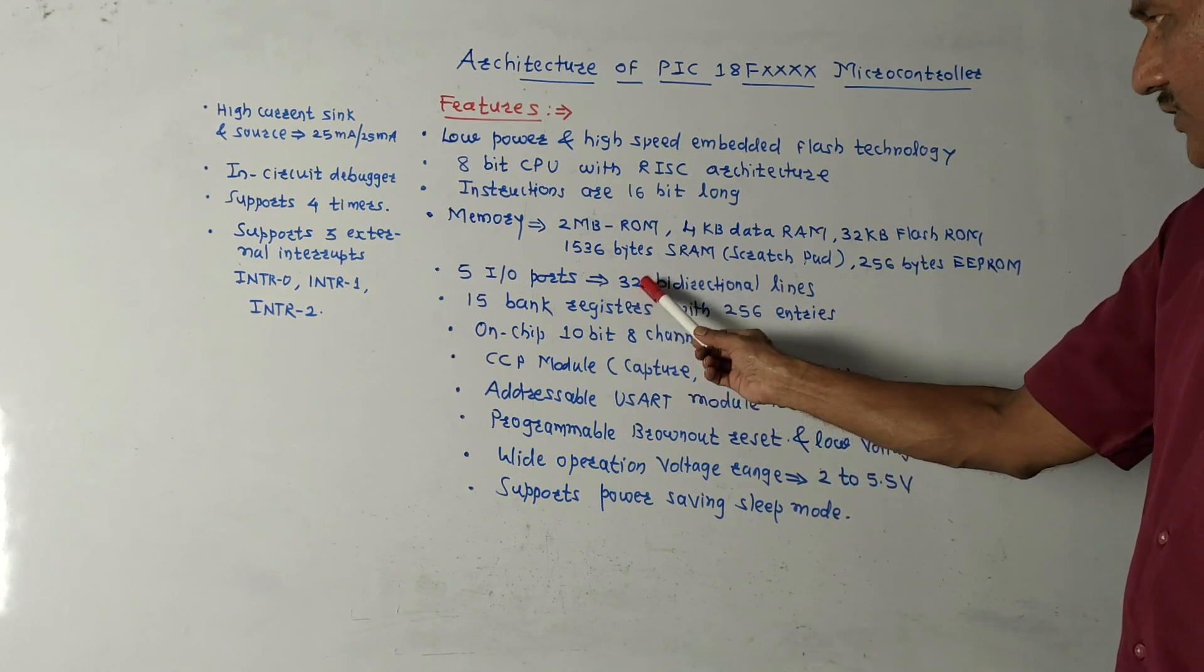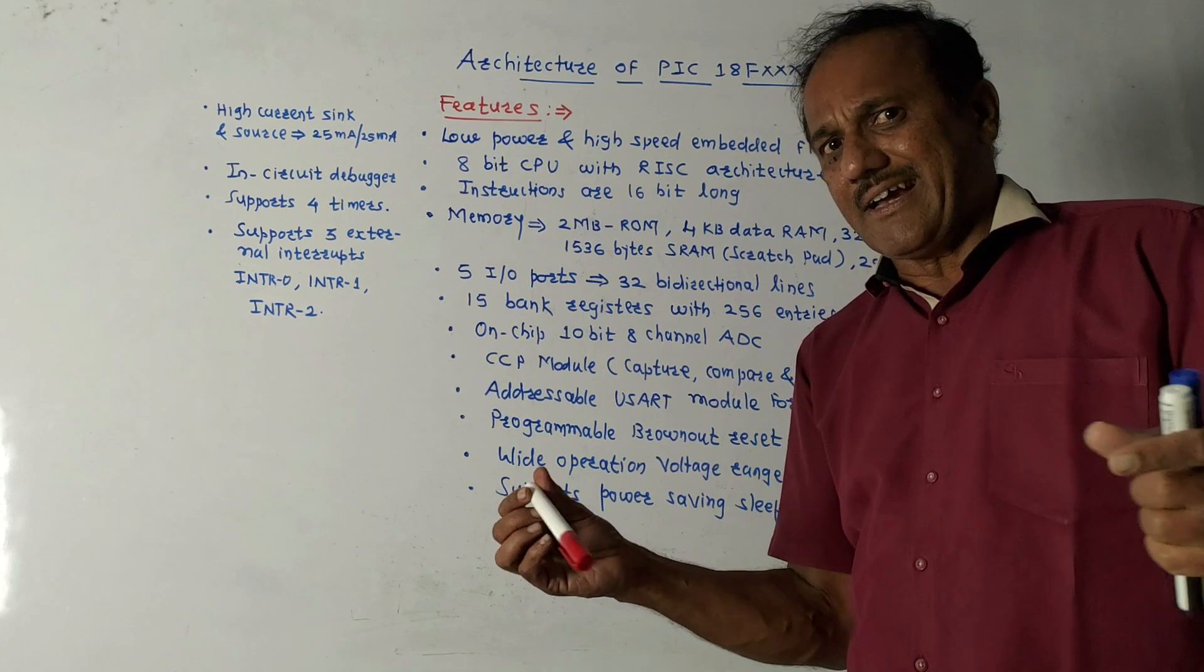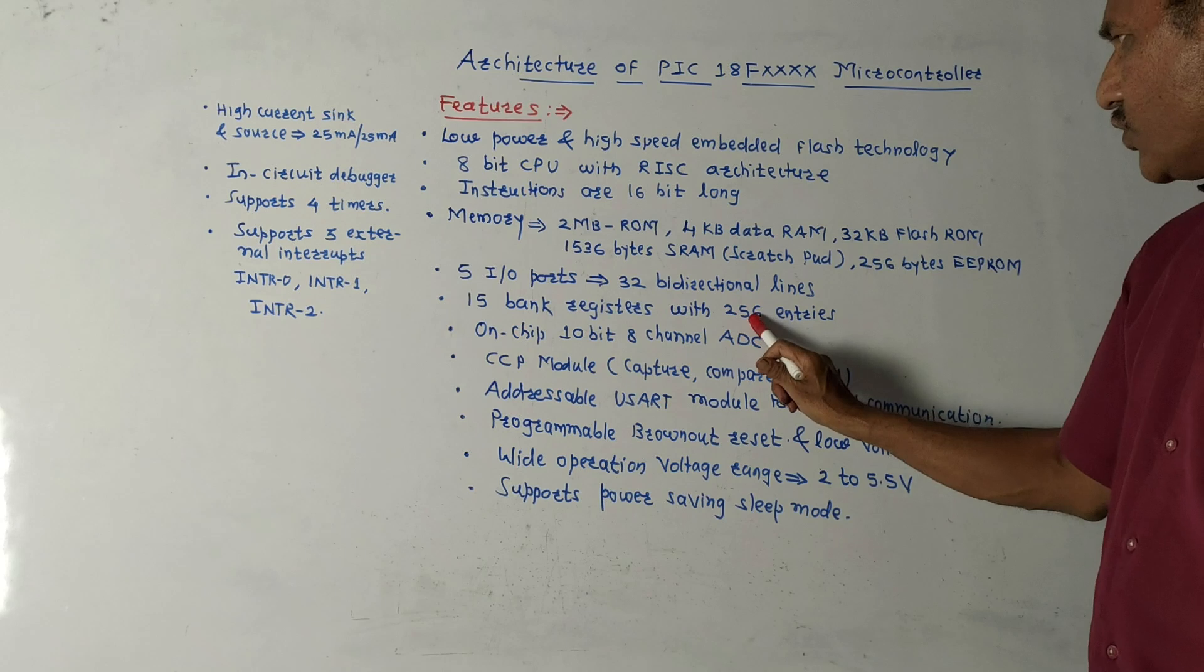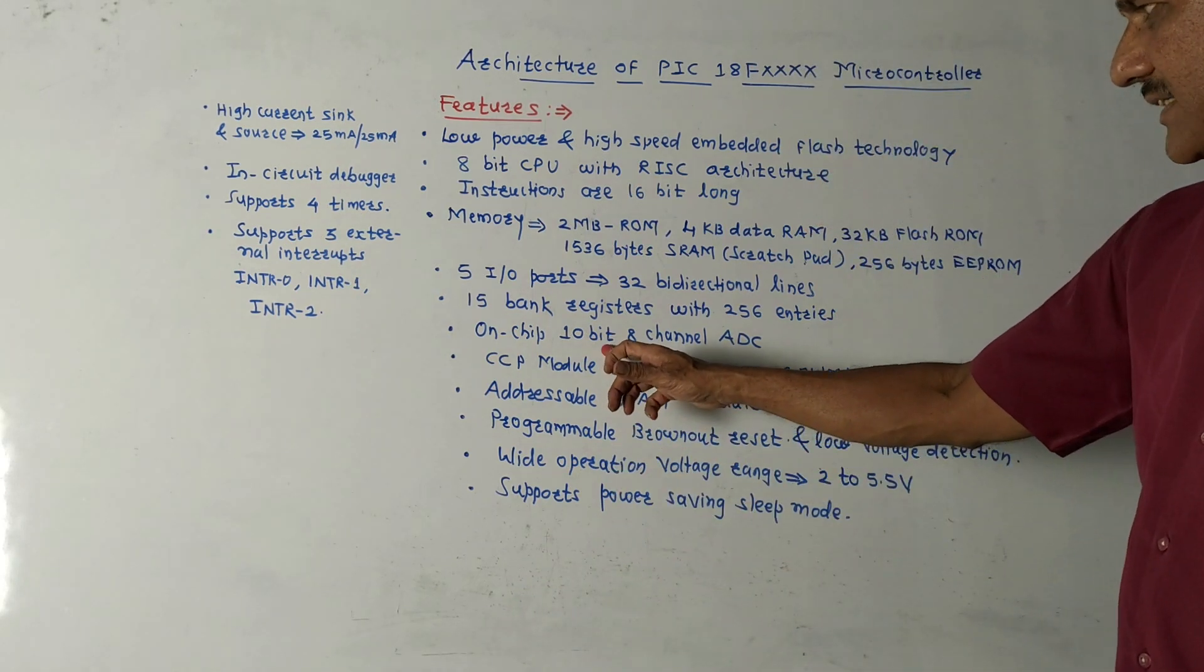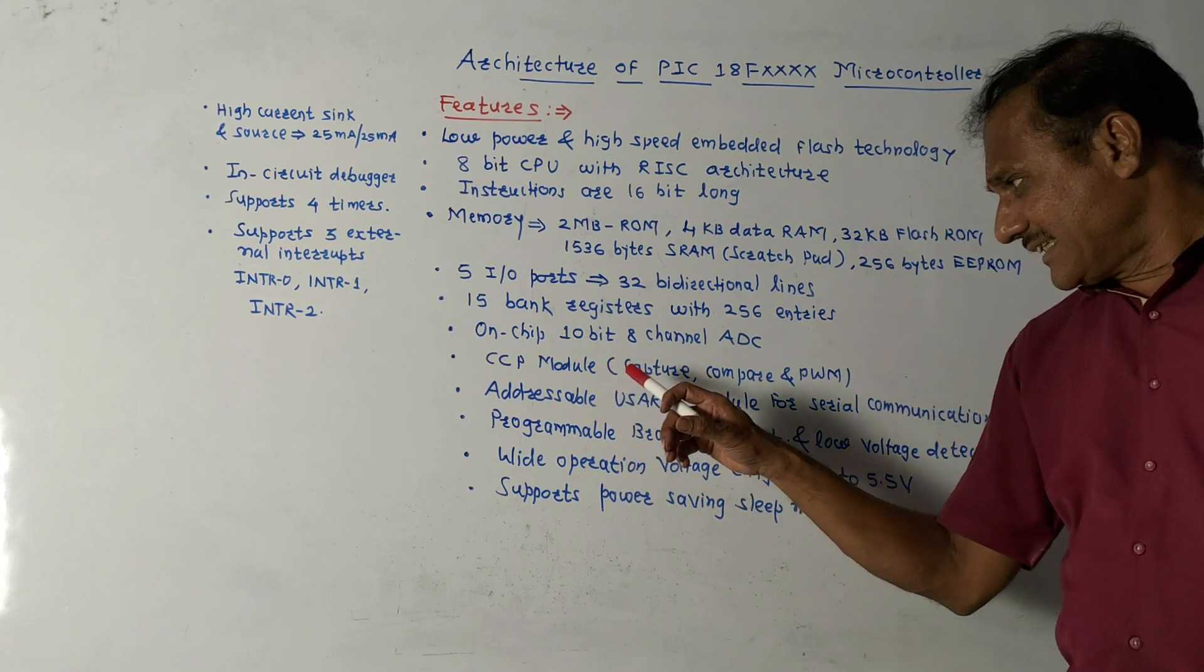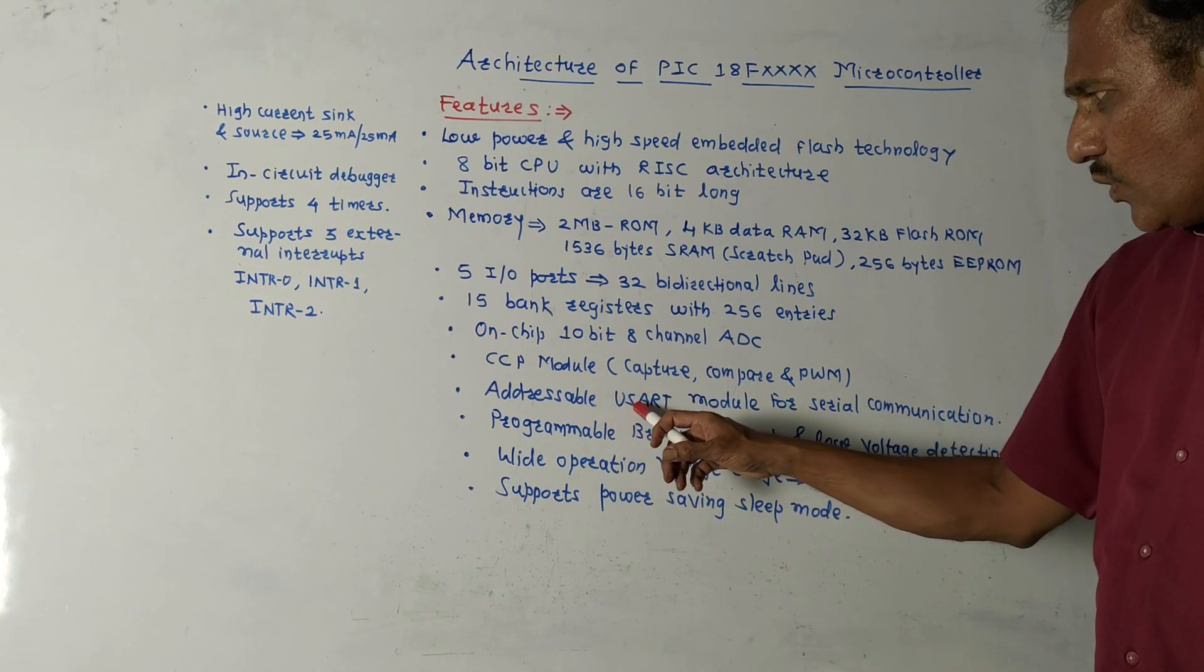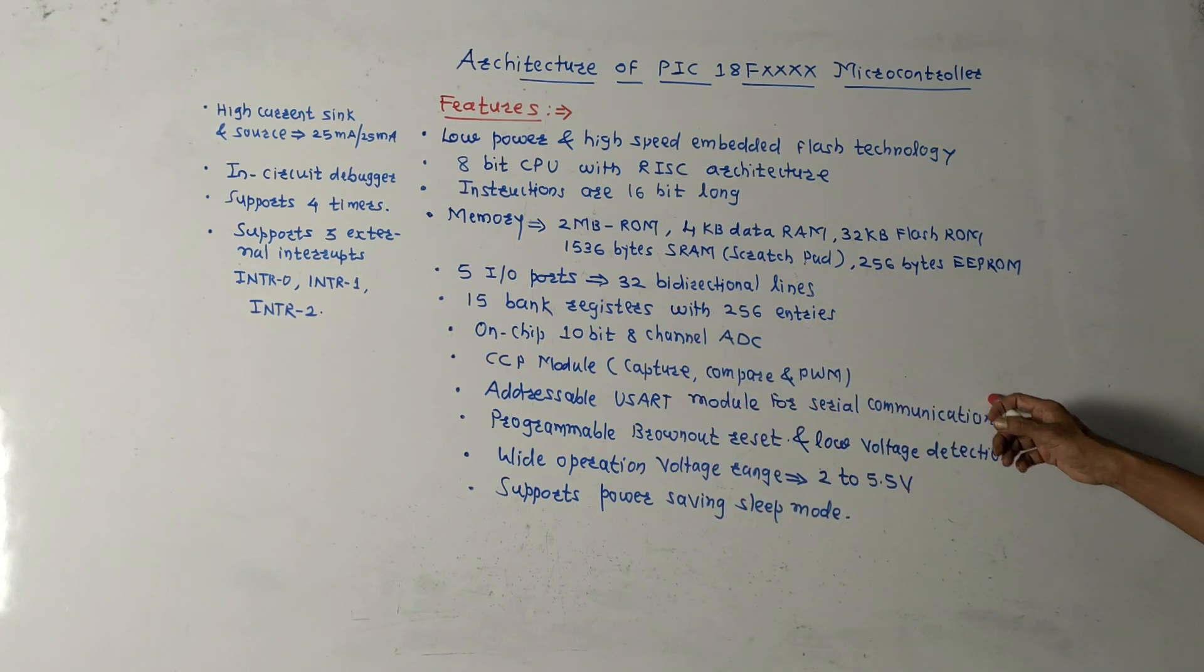It is operated by using 32 bidirectional lines. There are different register banks. It has 15 bank registers with 256 entries. It contains ADC, analog to digital converter, which is on-chip ADC having 10 bits and 8 channels. Important feature is CCP model, that is capture, compare and PWM model. We are going to study it in detail.